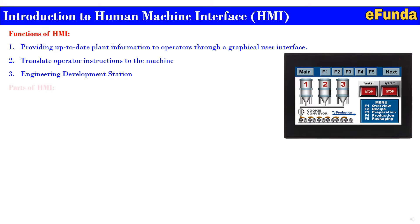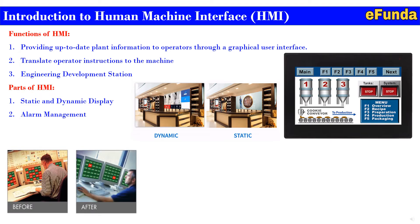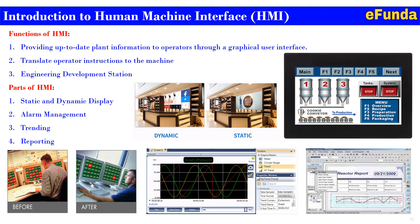Now one can see the parts of HMI. First, static and dynamic display. We can differentiate between two pictures, that is dynamic and static. Static is a still picture whereas dynamic is a moving screen. Second, alarm management. One can see the picture where alarms can be seen on a train, that is before and after. Third, trending. One can see the graphs where various trends are shown, and various colors are used to differentiate the trending. Fourth and most important is reporting, where one can see the screen where various parameters on the specified date are displayed so that the operator will get complete information in terms of reporting.